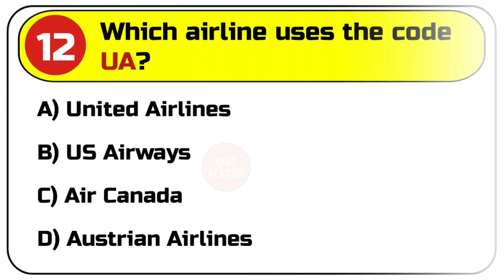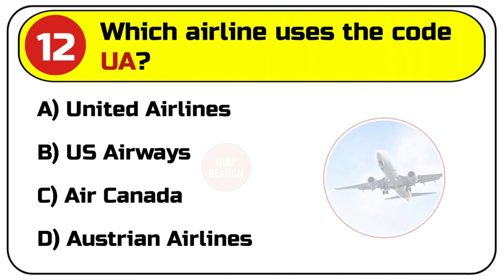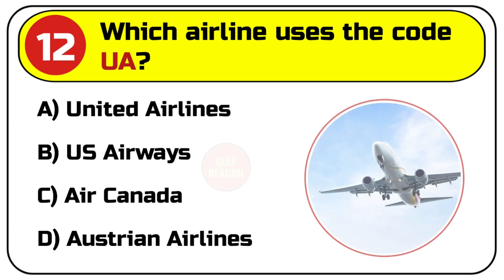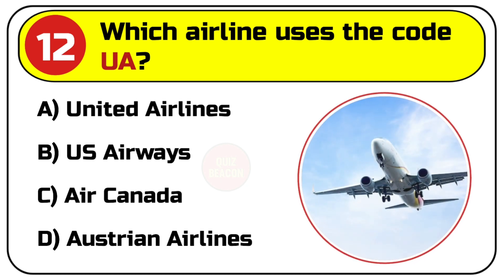Question number twelve: which airline uses the code UA? Options are A. TK.